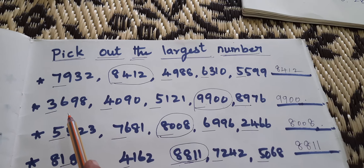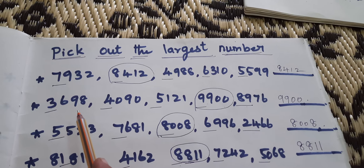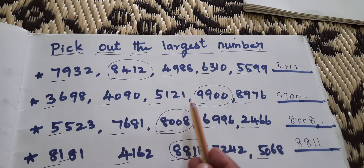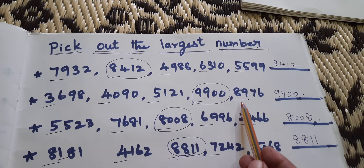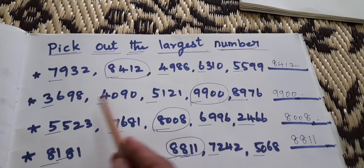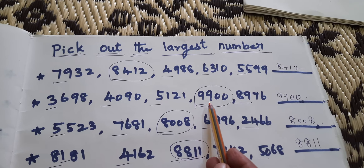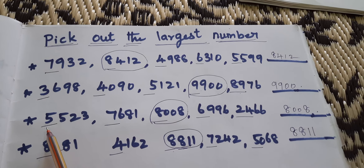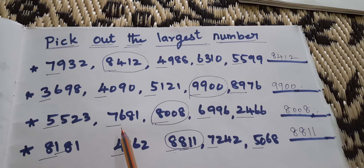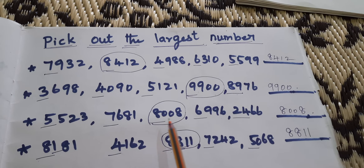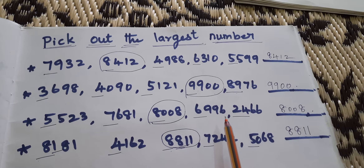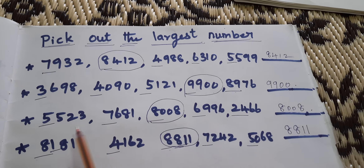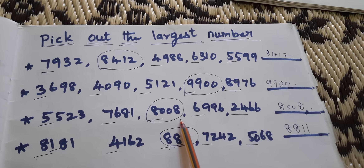Next set: 3698, 4090, 5121, 9900, 8976. Which one is the biggest number? 9900 is the biggest number, largest number. Then: 5523, 7681, 8008, 6996, 2466. Which one is the largest number? 8008. Pick out the largest number.